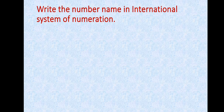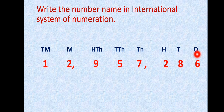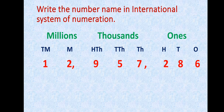Now let's try to write one more number according to the international system of numeration. Same as we have done earlier, I will first write the places: ones, tens, hundreds, thousands, ten thousands, hundred thousands, million, ten million. I will read this as 12,957,286.